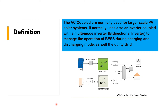AC coupled systems are normally used for large-scale PV solar systems. They normally use a solar inverter coupled with a multi-mode inverter — a bi-directional inverter — to manage the operation of the battery energy storage system during charging and discharging modes, as well as the utility grid.